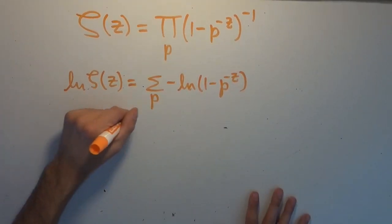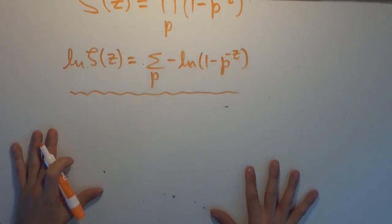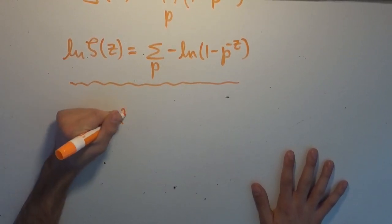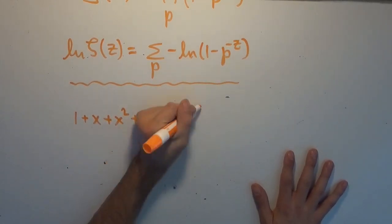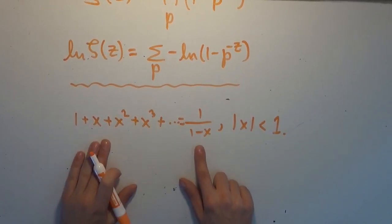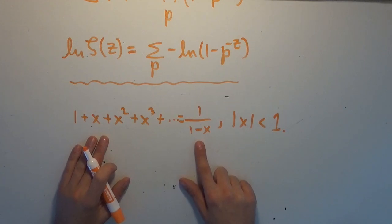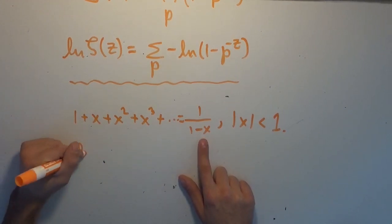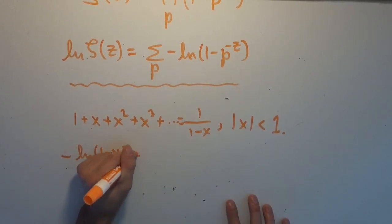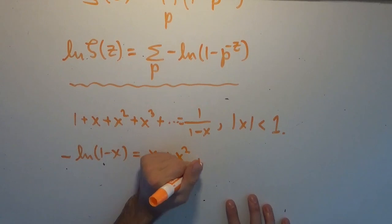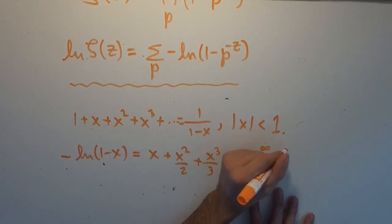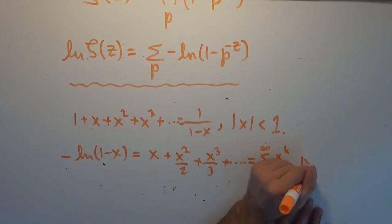Now we need one other fact. The board's not too cluttered, so I'm happy to prove this now. If we consider the geometric series, which is 1 plus x plus x squared plus x cubed plus dot dot dot, it's easy to show that this is 1 over 1 minus x for x with absolute value less than 1. And all we have to do is integrate both sides using basic rules for anti-differentiation. If we integrate this side, we get negative natural logarithm of 1 minus x. And integrating term-wise, this is equal to the sum from k equals 1 to infinity of x to the k over k.